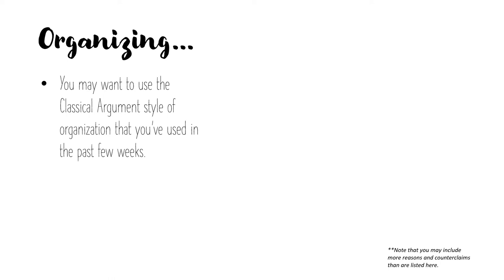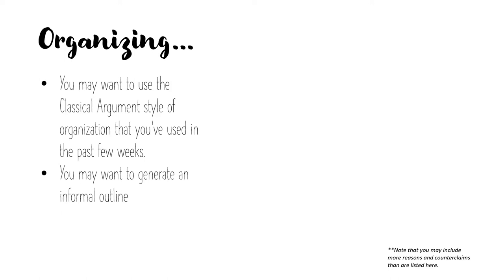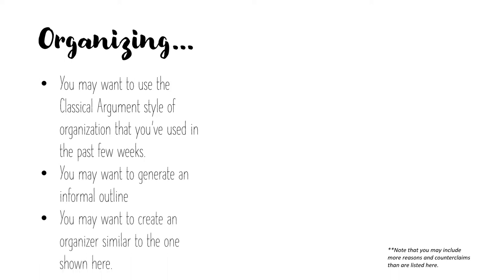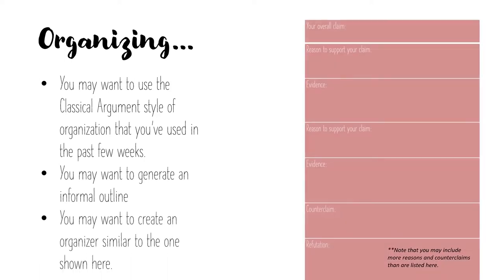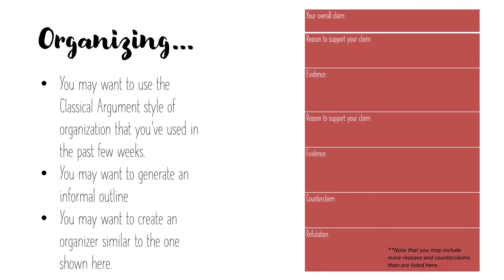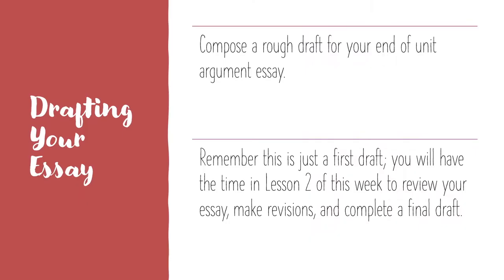You are free to choose any method of organization that will work best for you. You may want to use the classical argument style of organization you've used in these past few weeks. You may want to generate an informal outline of bullet points, or create an organizer similar to the one shown here. After you've completed organizing your writing, you'll compose your rough draft. Remember, this is just a first draft. You will have time in lesson two of this week to review your essay, make revisions, and complete a final draft.